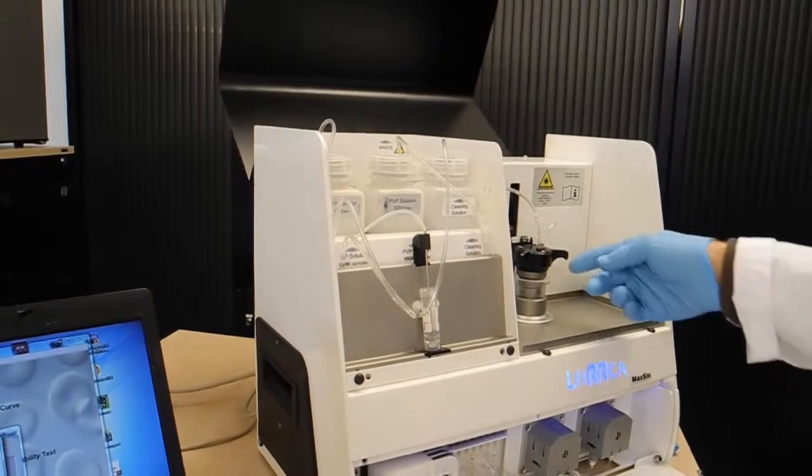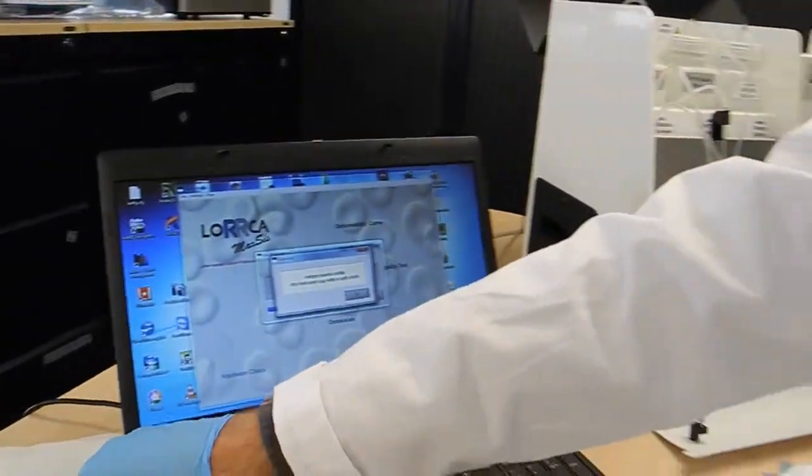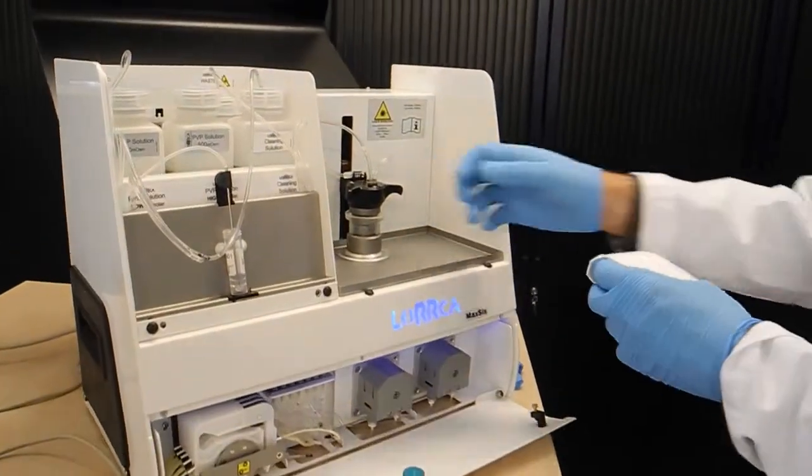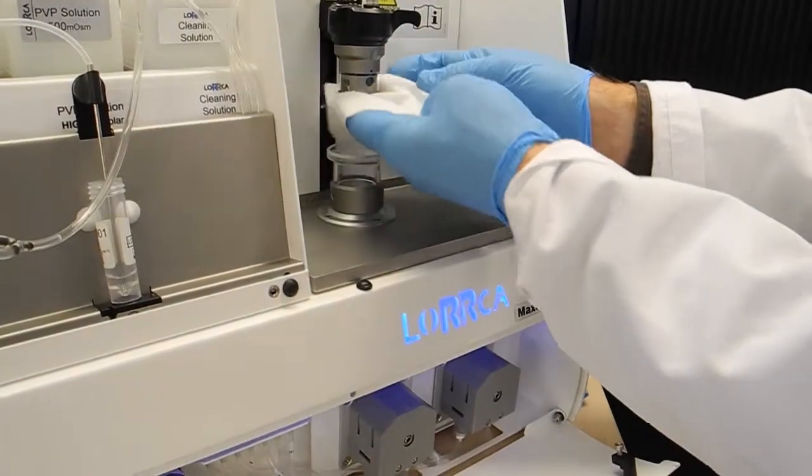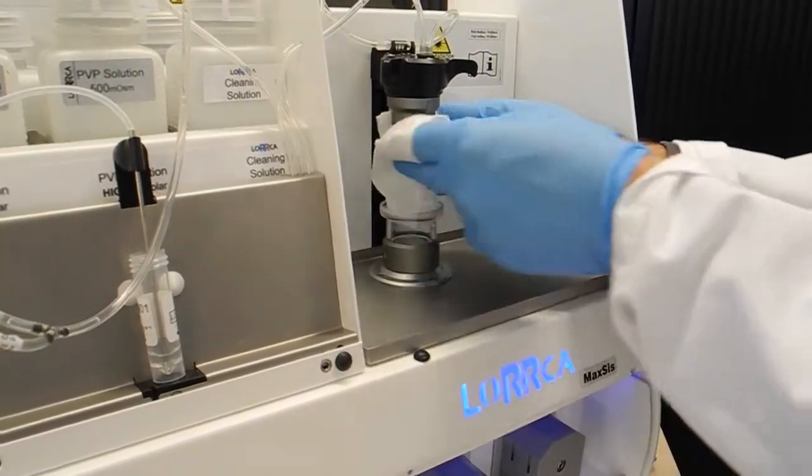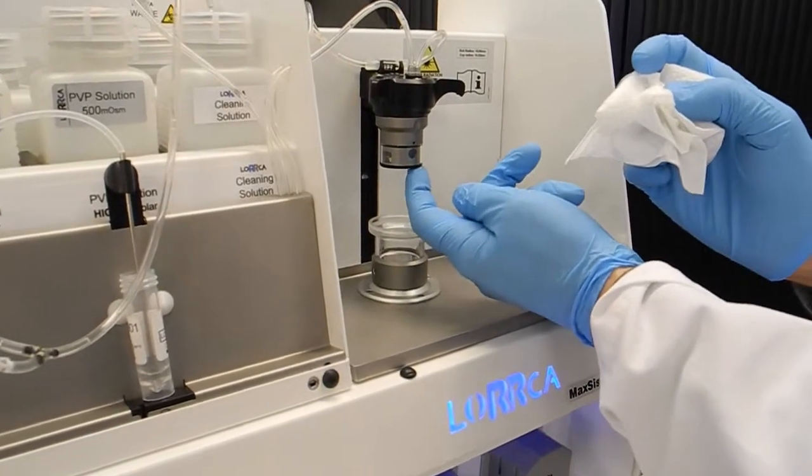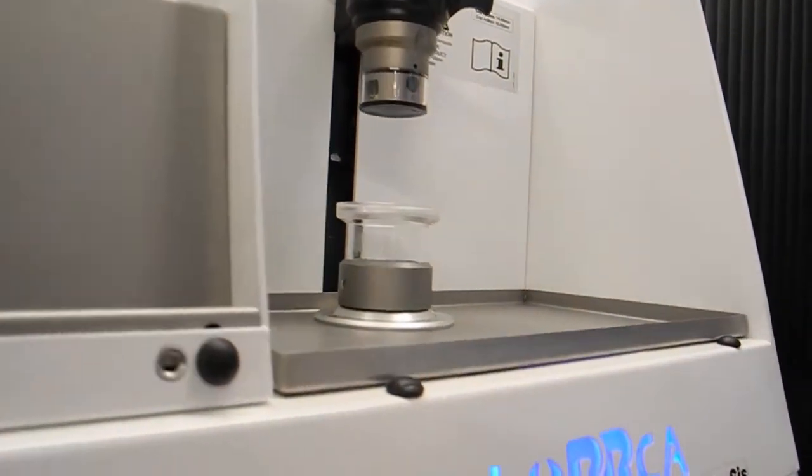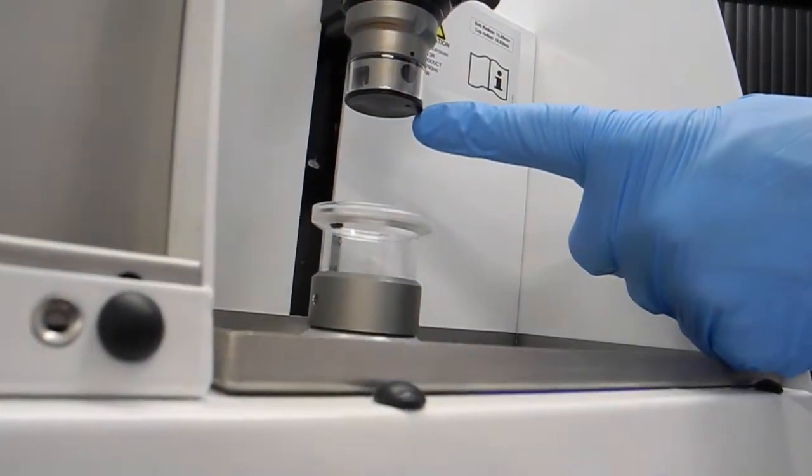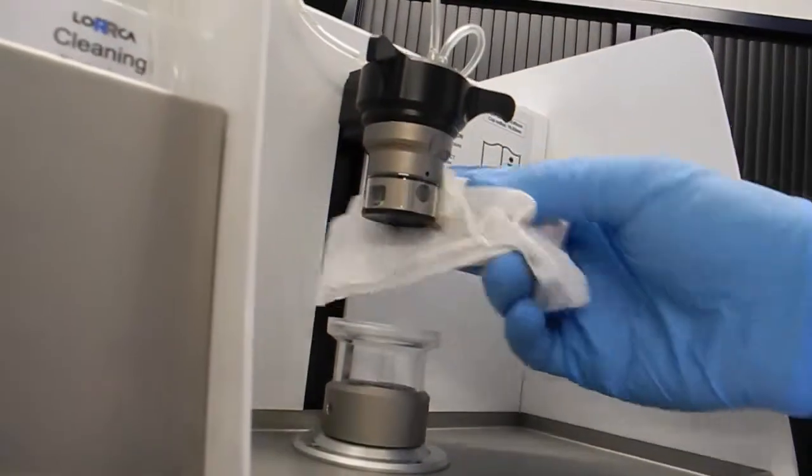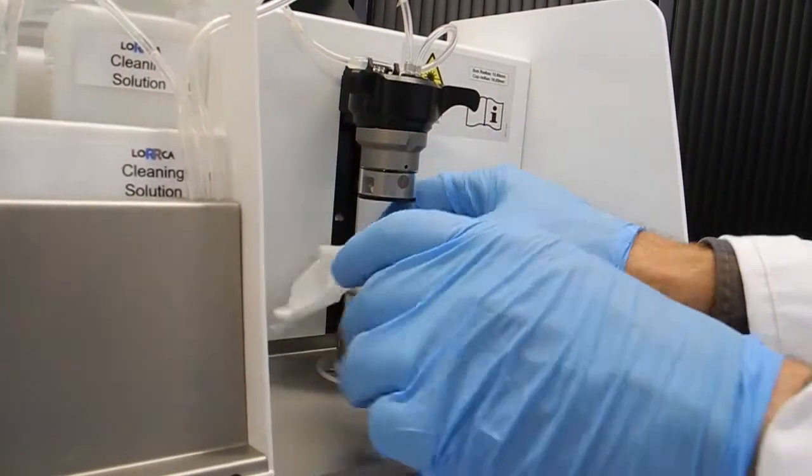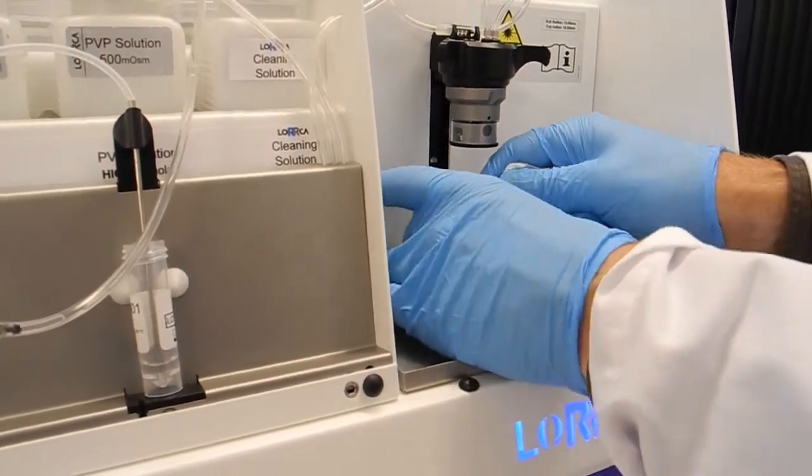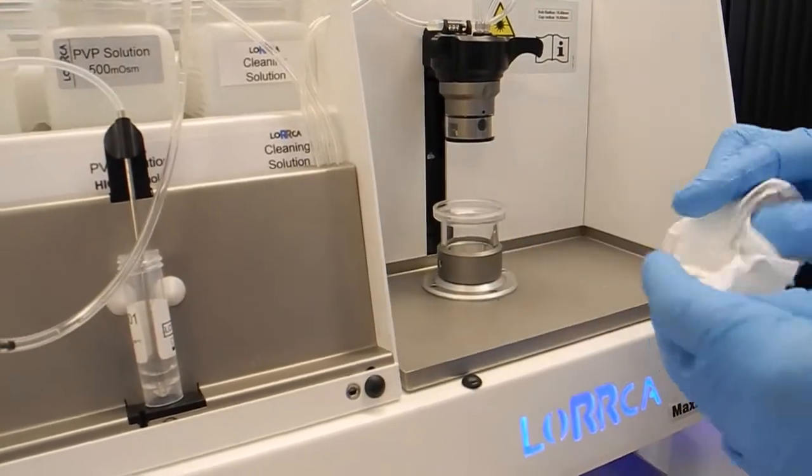Dry the bulb with a dry cloth. Dry especially underneath because here you can find the entry and exit of the fluid, which shouldn't become blocked by PVP or anything else. Dry the bulb and we're done.